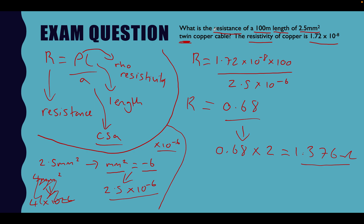Let's recap. We read the question and identified what we had: resistance to find, length, CSA, a twin cable, and resistivity given. We pulled out the formula — resistance equals resistivity multiplied by length divided by CSA. We input the values: 1.72 times 10 to the minus 8 multiplied by 100, divided by the cross-sectional area.